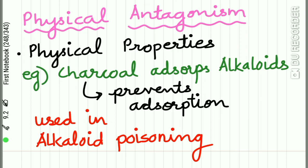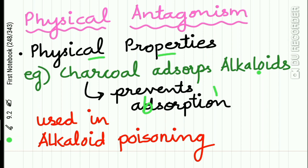First, physical antagonism. As the name implies, it is based upon the physical properties of the drug. An example is activated charcoal, which absorbs alkaloids and prevents their absorption. It is therefore used in alkaloid poisoning.